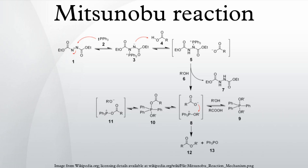The Mitsunabu reaction has been applied in the synthesis of aryl ethers. With these particular reactants, the conversion with DEAD fails because the phenol is only weakly acidic. Instead, the related 1,1'-azodicarbonyl dipiperidine is used, of which the betaine intermediate is a stronger base.